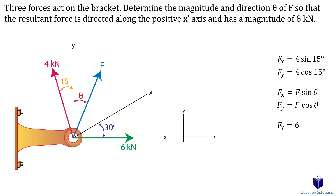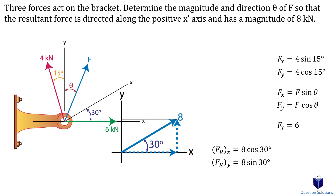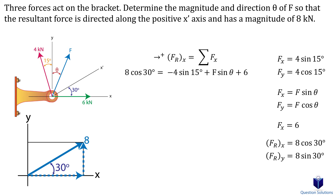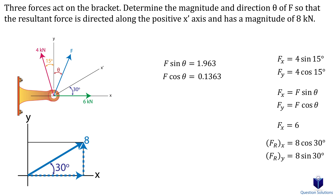The resultant force is 8 kilonewtons at 30 degrees above the positive x-axis. We can find its x and y components — the x component is adjacent so it's cosine, and the y component is opposite so it's sine. Now we write the sum of components. Unlike the previous problems, we're working backwards: the x and y components of the resultant are on the left side, while the components of the other forces are on the right. After simplifying both the x and y summations, we have two equations with two unknowns.